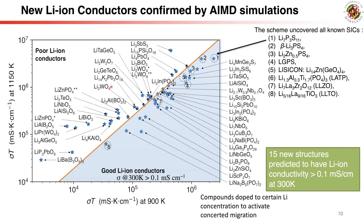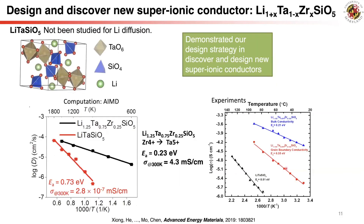We use ab initio molecular dynamics simulations to assess lithium diffusion in these materials at two temperatures. We confirm all known superionic conductors with high room-temperature ionic conductivity, and find 15 new structures with potential to achieve greater than 0.1 mS/cm at room temperature. One of these predicted materials, lithium titanium silicate, is predicted with a doped composition to have an activation energy of 0.23 eV and a conductivity of 10⁻³ S/cm. This new fast ion conductor was confirmed experimentally by Professor Heilong Chen's group from Georgia Tech, with ionic conductivity in agreement with the computational prediction.